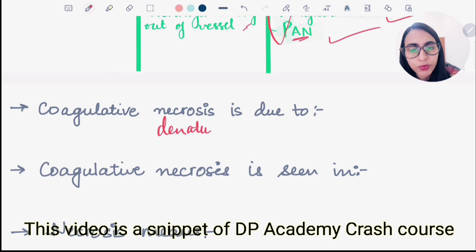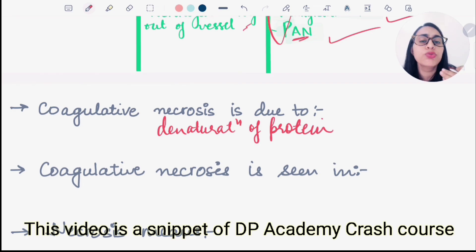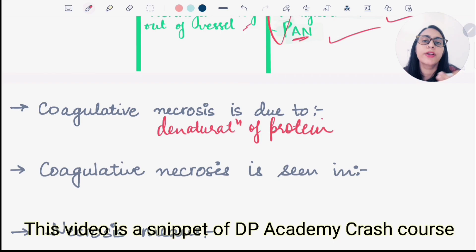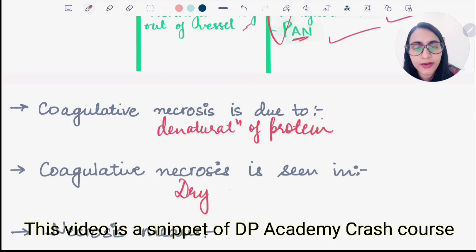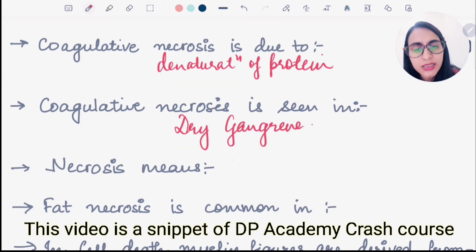Coagulative necrosis is caused by denaturation of proteins; it is dry necrosis where the nucleus is destructed and karyorrhexis is seen. Tombstone appearance is a key feature. Coagulative necrosis is the most common type and is seen in dry gangrene, while wet gangrene shows liquefactive necrosis, which involves enzymatic degradation.